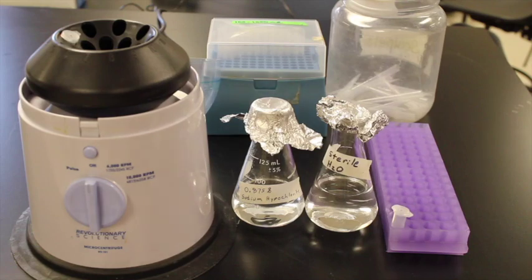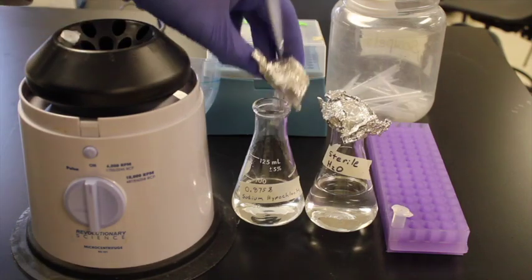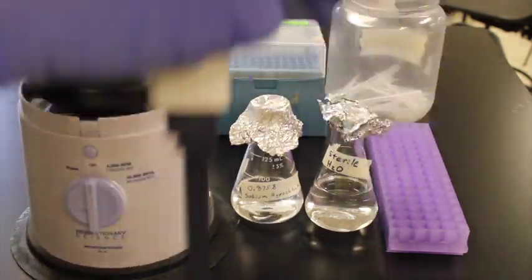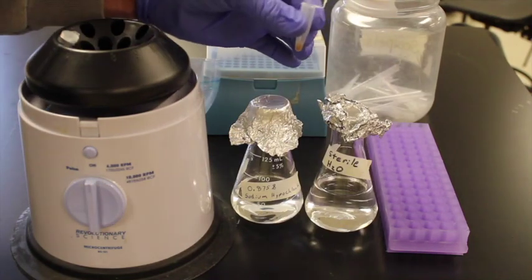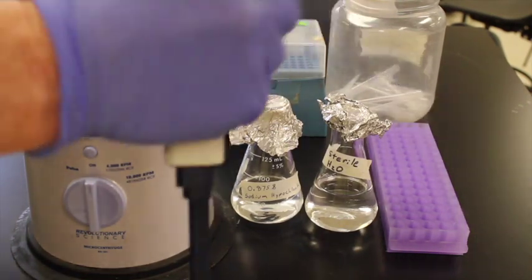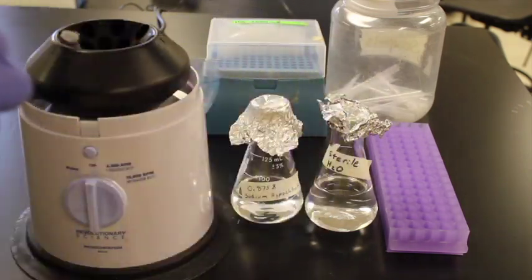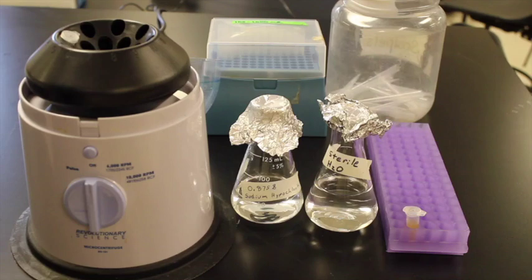We'll then go into the sodium hypochlorite, get one ml from our sodium hypochlorite, add it to the microcentrifuge tube, flick it around a couple times just to make sure. And then we leave it for three minutes.